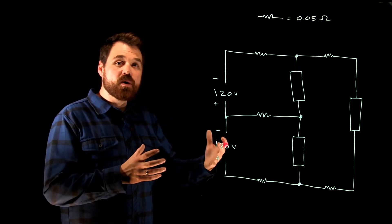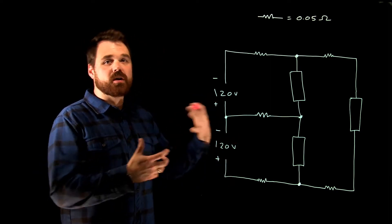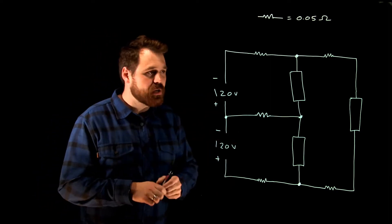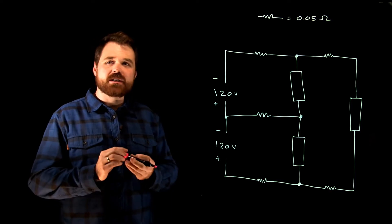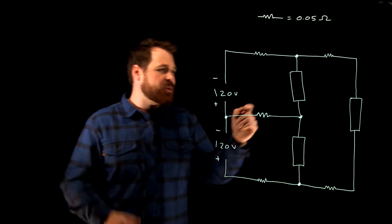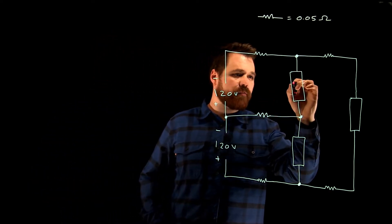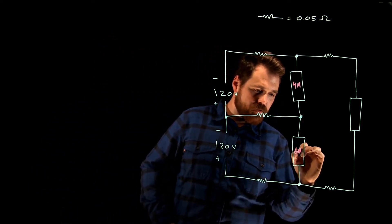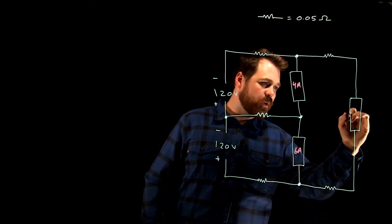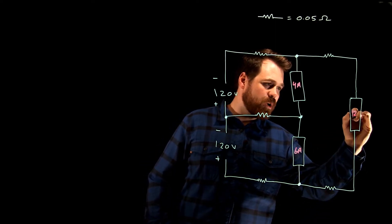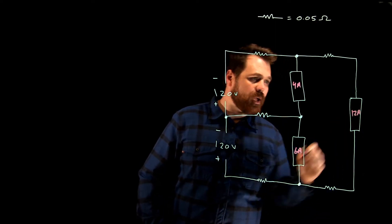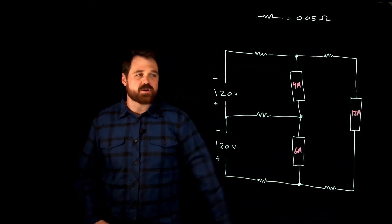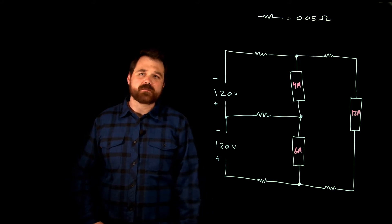The load is what determines the amount of current that flows. We're going to use this example here — a four amp load, a six amp load, and a 12 amp load. So the load is going to determine the current flow.